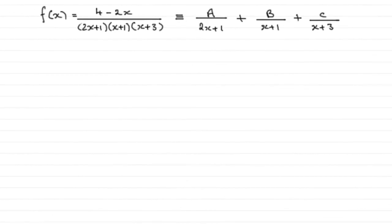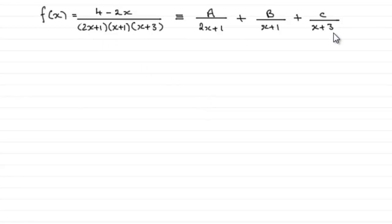For this part of the question we're given f(x) and told that it's equivalent to A over (2x+1) plus B over (x+1) plus C over (x+3). We've got to work out these constants A, B, and C. To do something like this you need to be familiar with partial fractions — if not, go to my website and look at the tutorials for partial fractions.